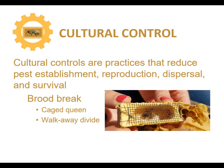Cultural controls are practices that reduce pest establishment, reproduction, dispersal, and survival. Since Varroa mites need honeybee brood for reproduction, creating a break in the honeybee brood cycle also creates a break in Varroa reproduction cycles. Beekeepers can create a break in the brood by caging or removing the queen or by doing a walkaway divide. It should be noted that honeybees will normally raise new queens in these situations.